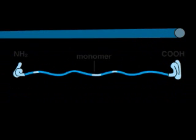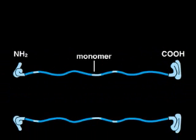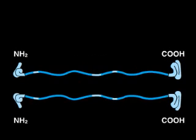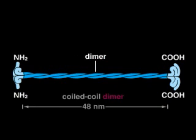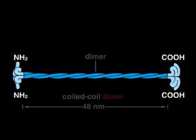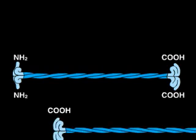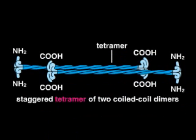At the lowest level, two monomers associate with each other to create a twisted dimer. Two dimers then line up to form a staggered tetramer. The two dimers are arranged in opposite orientations, with their amino terminal ends away from each other, so that the two ends of the tetramer are indistinguishable.